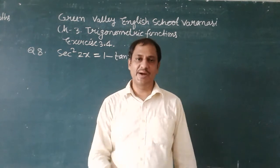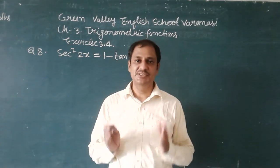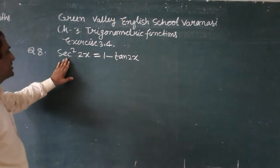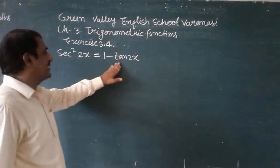In this question we are going to find a general solution. Here, question number A is sec²2x is equal to 1 minus tan2x.